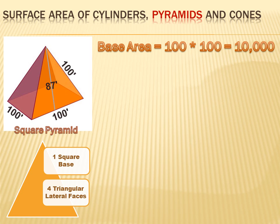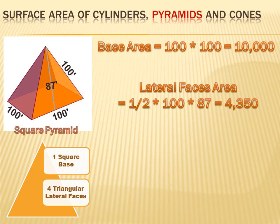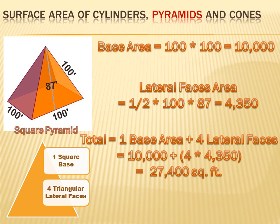The base, which is a square, is 100 by 100, so the area of the base is 10,000. Each of the triangular lateral faces has area one-half times the base times the height, or one-half times 100 times 87, which equals 4,350 each. So the total surface area of the pyramid is the area of the base plus four times the area of each lateral face: 10,000 plus four times 4,350 equals 27,400 square feet.